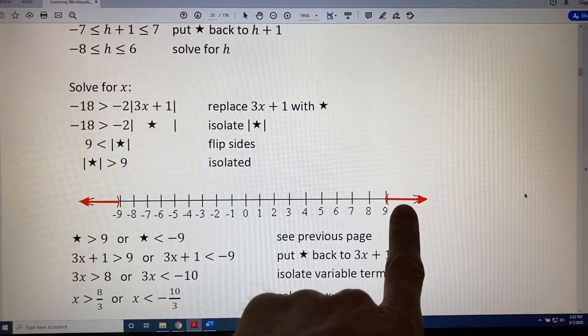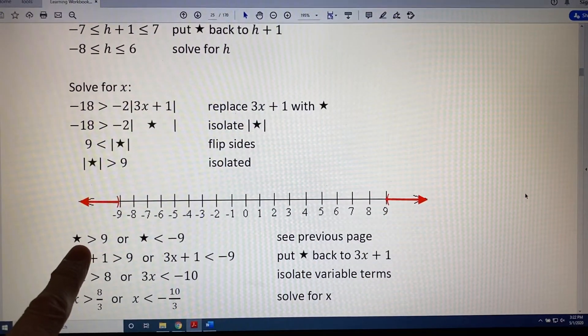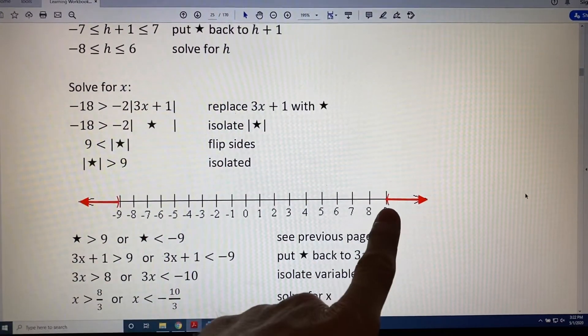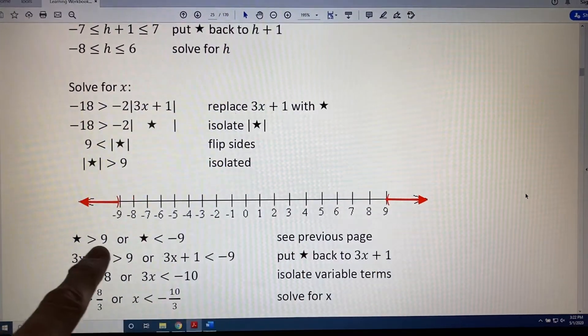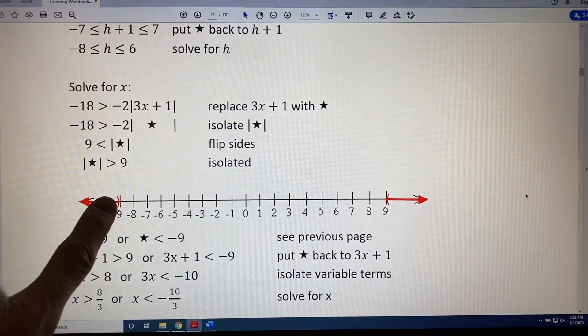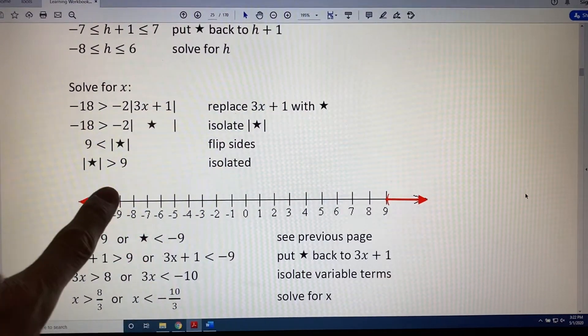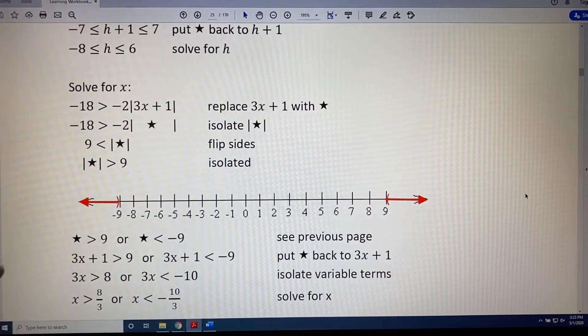For each of those, we write an inequality. For this one, we write star greater than 9 because we are to the right of 9. For this one, we write star less than negative 9 because we are left of negative 9.